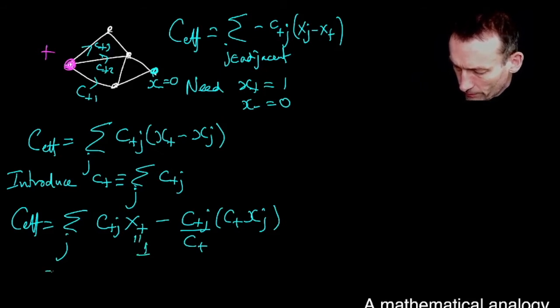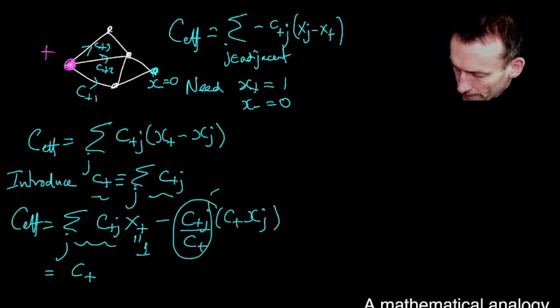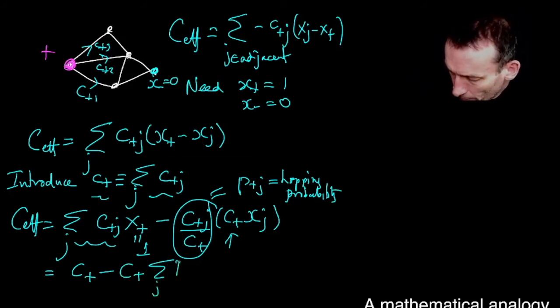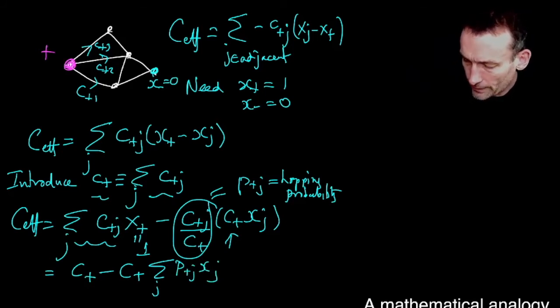Now, x plus is just equal to one. So I can rewrite this as c plus, because this is just this. And then I notice, this is my p plus j, my hopping probability, according to the analogy that I just explained. And the c plus can come outside here, so that c plus can come outside. So I've got minus c plus again, sum over j, because c plus doesn't depend on j. Then I've got the p plus j xj.